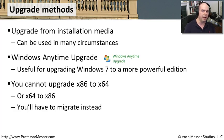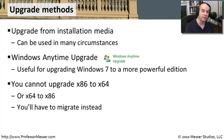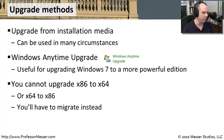One thing to keep in mind is that if you're running a 32-bit version of Windows and you need to get to a 64-bit version, there's no upgrade path for that. You must do a reinstallation. Similarly, if you wanted to downgrade from 64-bit to 32-bit, there's also no path for that - you have to back up user data and do a migration. In the next couple of videos, we'll show you how to do that migration.